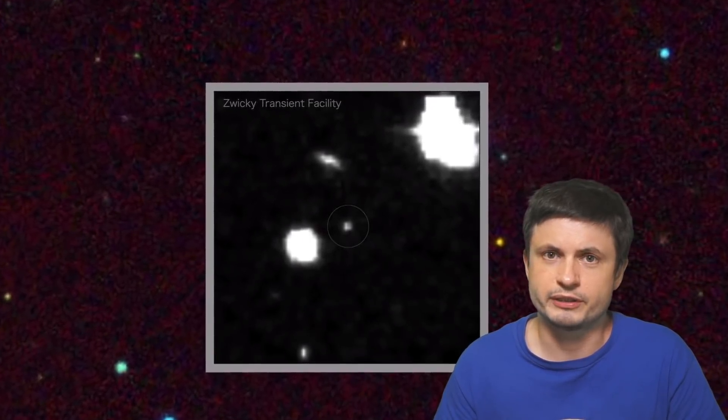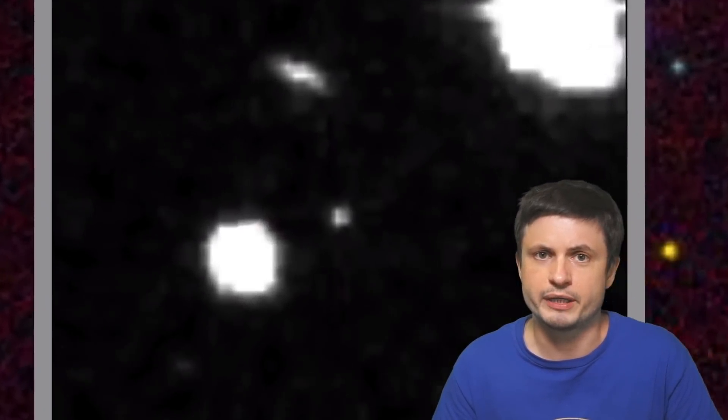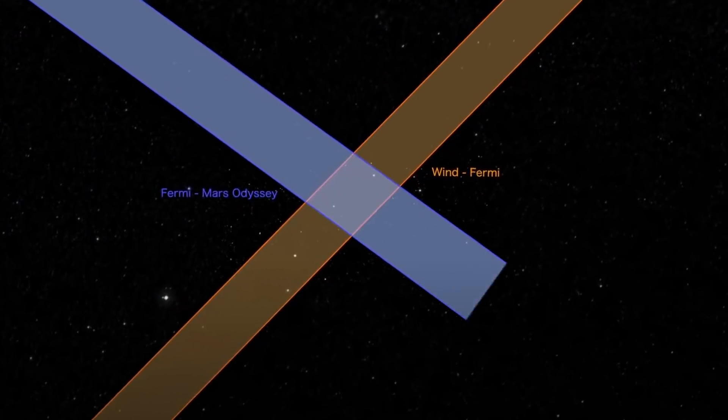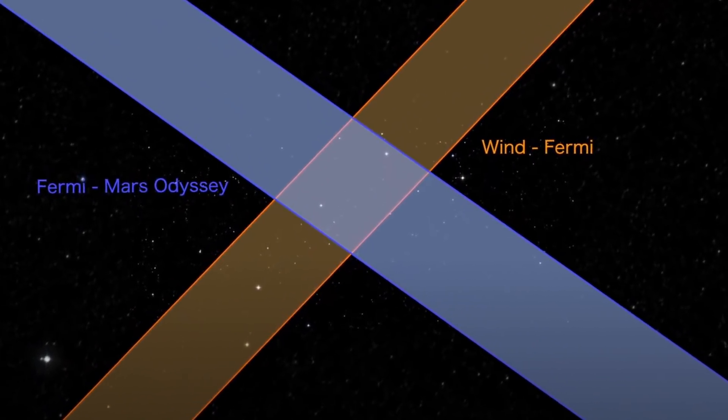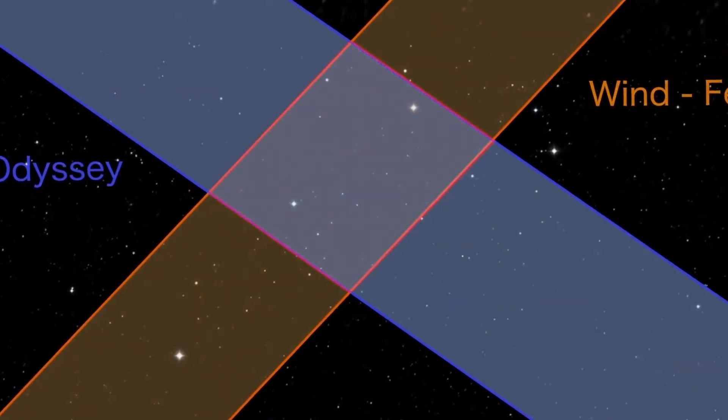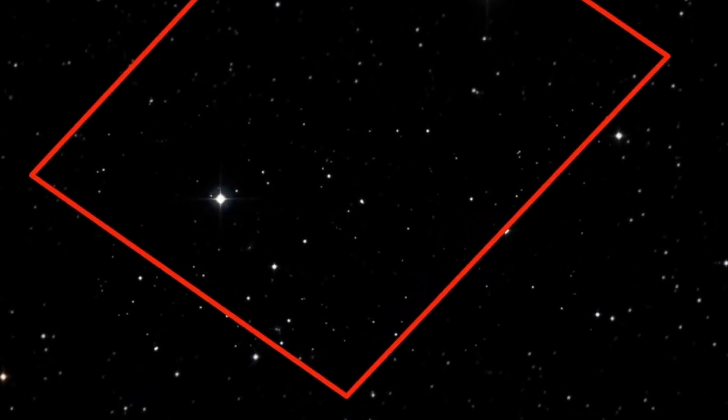But last year something else was discovered that was recently analyzed in a paper you can find in the description below. Another observation was made by different facilities around the planet discovering another unusual GRB. And because this one here was actually thoroughly analyzed by different facilities we now have a pretty good picture of what we think happened here.